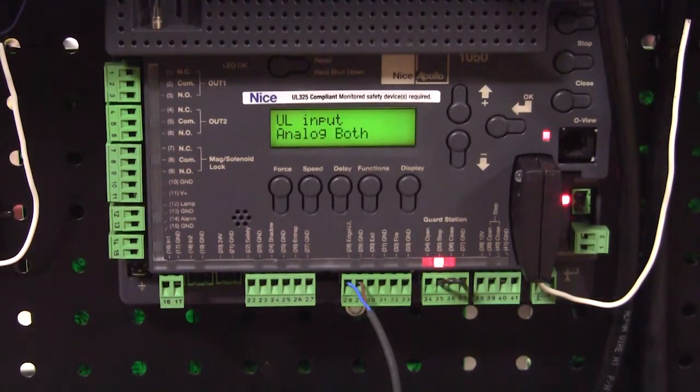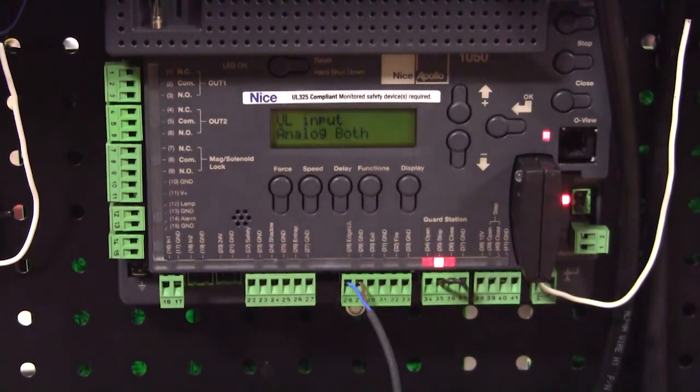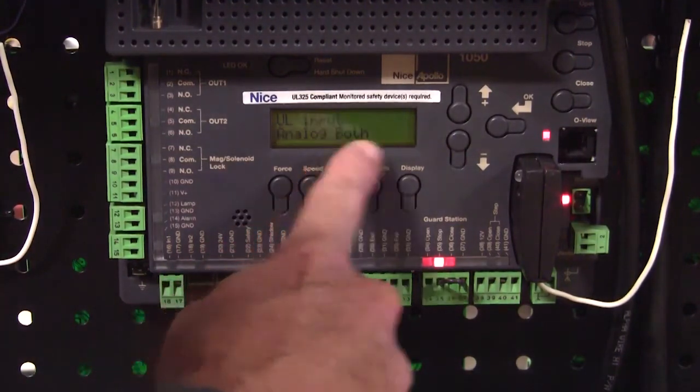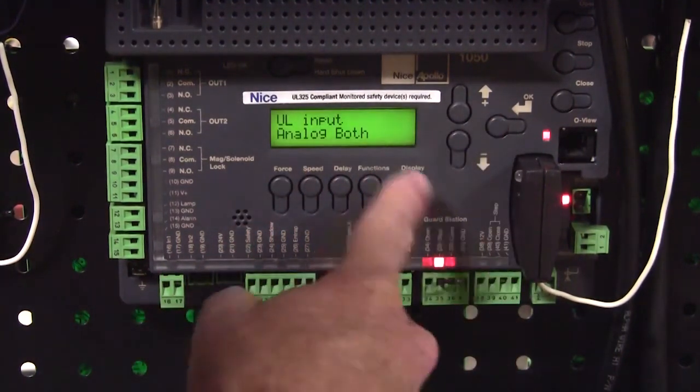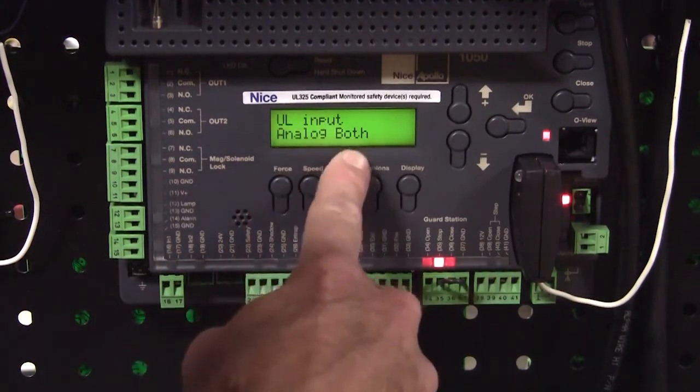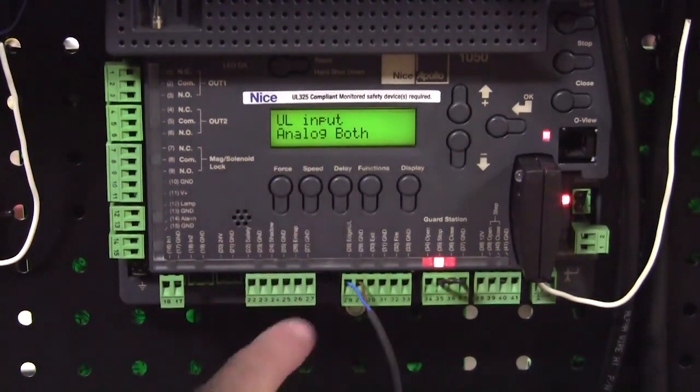If we're in a learn mode for a swing gate, it's going to give us this option. Close would just protect the gate in the closing direction. Open would just protect in the open direction. So we're going to go ahead and program as both. Now we've got UL input analog both, so it's looking for a 10k resistive input, which is what it's getting from this device.